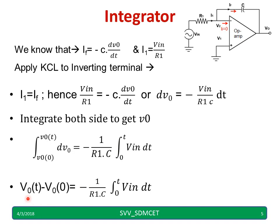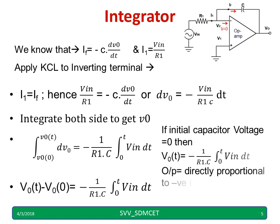So output voltage I will get V0 of t minus V0 of 0 equal to 1 by R1 into C integration VIN into dt minus. Now if the initial capacitor voltage is 0 then V0 of t is given by minus 1 by R1C into integration VIN into dt.